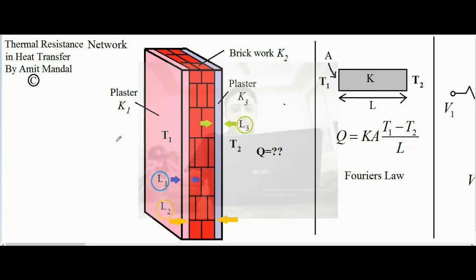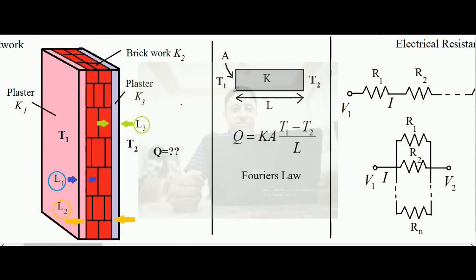In this lecture I will talk about thermal resistance networks — cases where a number of thermal conductors are involved in a network and how to find the heat transfer rate. You can see over here that there is a wall: on the left-hand side there is a pink-colored plaster made up of solid material with thermal conductivity k1 and length l1, then a brick work with thermal conductivity k2, then another plaster with thermal conductivity k3 and thickness l3.